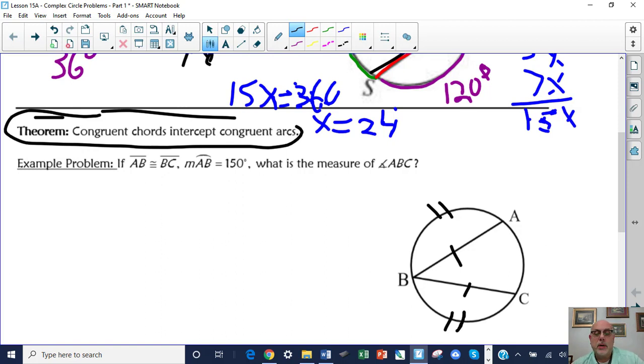So now this is just an arithmetic problem, because arc AB is 150, which means that arc BC is 150. And when you subtract them from 360, it tells you that arc AC is 60 degrees. So now you look at angle ABC. Angle ABC is an inscribed angle because its vertex is on the circumference of the circle. So the measure of angle ABC is half of the arc it intercepts. So it intercepts an arc of 60 degrees. Angle ABC is 30 degrees.